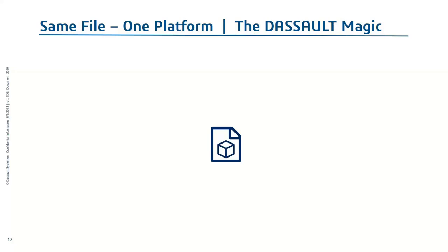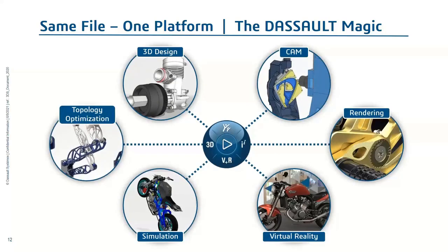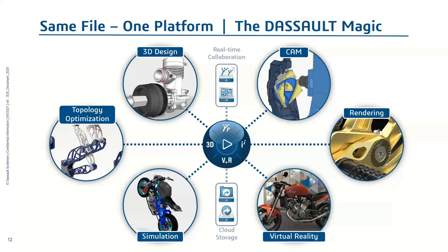What does this look like day to day? We have one file type throughout the entire design process — no more transferring files from 3D CAD to your simulation application and then a different tool for CAM, no more losing files or wondering which is the final assembly. Everything's connected together: files with members, members with each other, and the same user interface. Once you learn one role or app on the platform, you're pretty much a master at using them all. One file type goes from 3D design through topology optimization, simulation, virtual reality, rendering, and CAM. Woven in between are governance tools like project planning, lifecycle management, and review and markup.